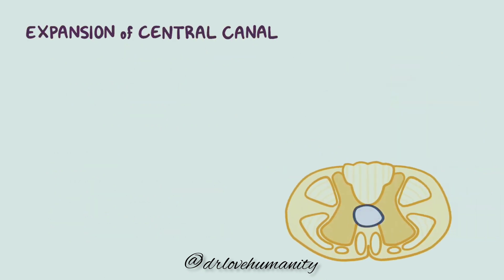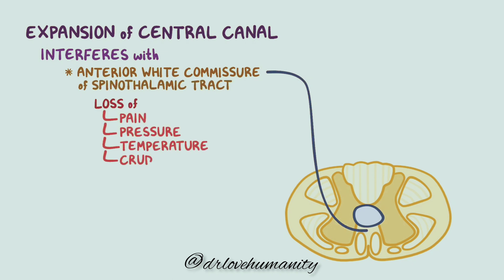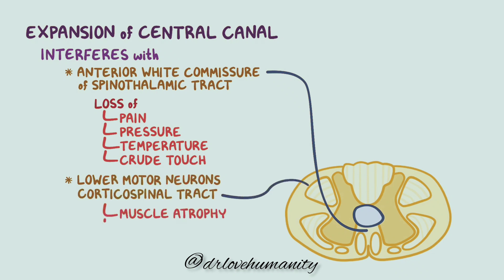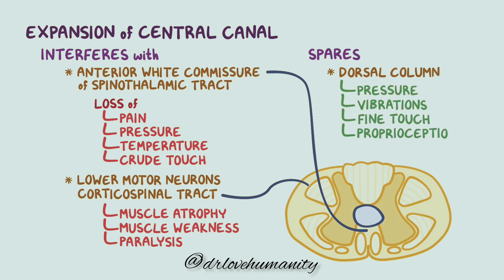Regardless of the cause, the expansion of the central canal in syringomyelia interferes with the fibers within the anterior white commissure of the spinothalamic tract. This leads to the loss of pain, pressure, temperature, and crude touch. As the central canal cavity expands, it damages the lower motor neurons connected to the corticospinal tract, which leads to muscle atrophy, muscle weakness, and paralysis. Syringomyelia usually spares the dorsal column, so sensations of pressure, vibrations, fine touch, and proprioception typically remain intact.